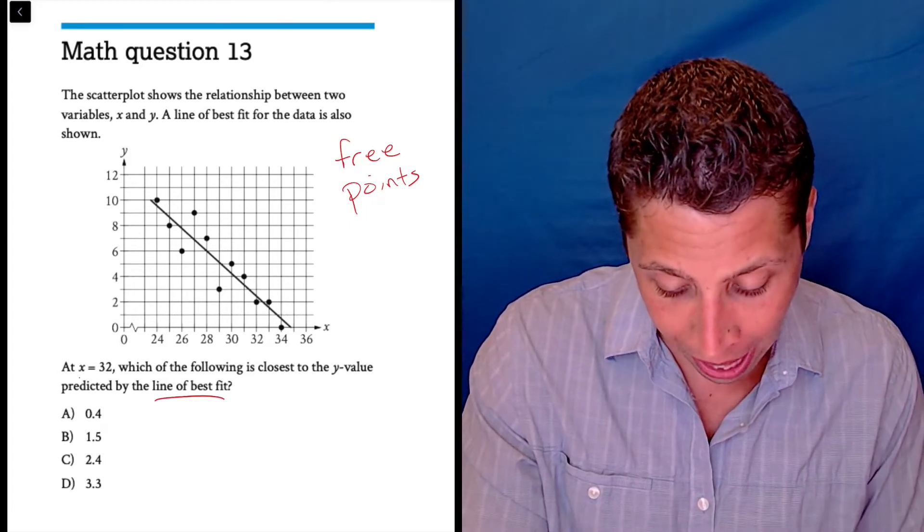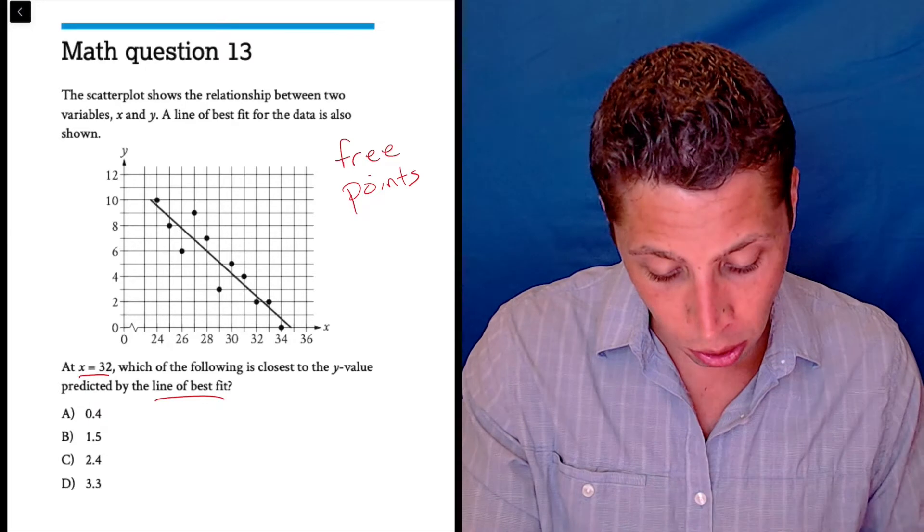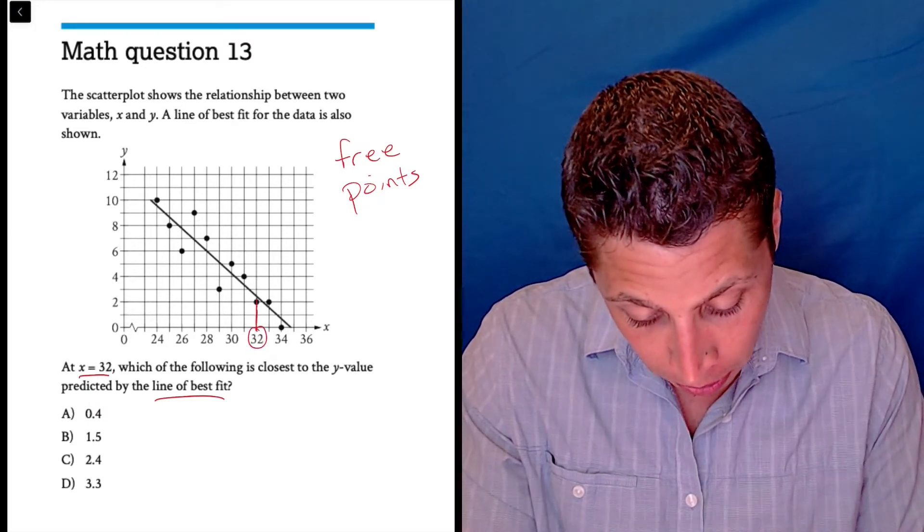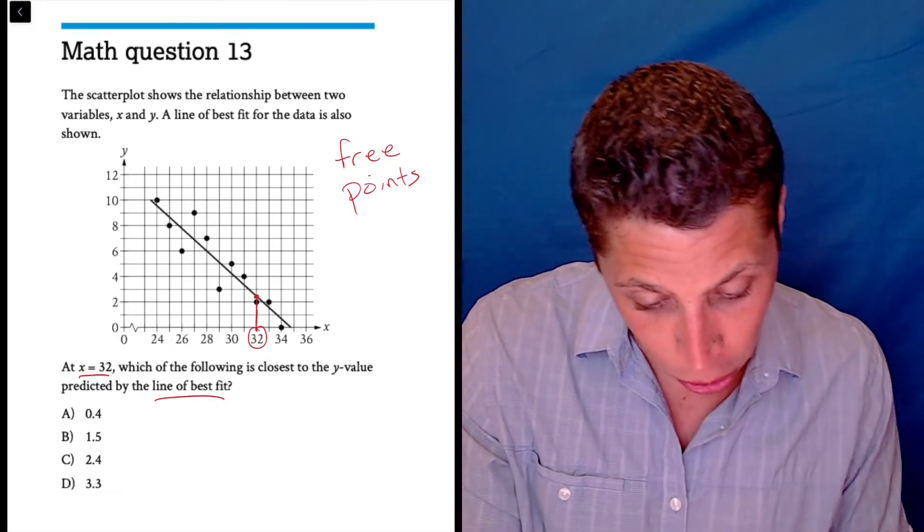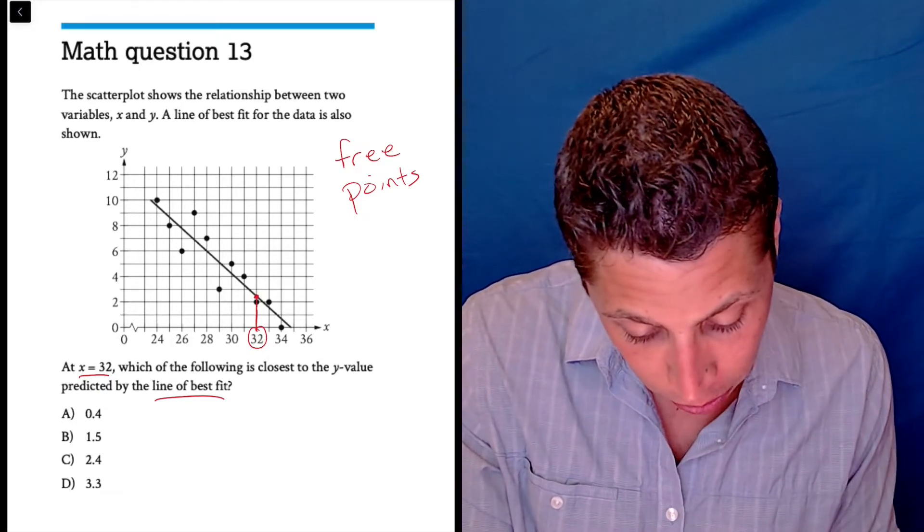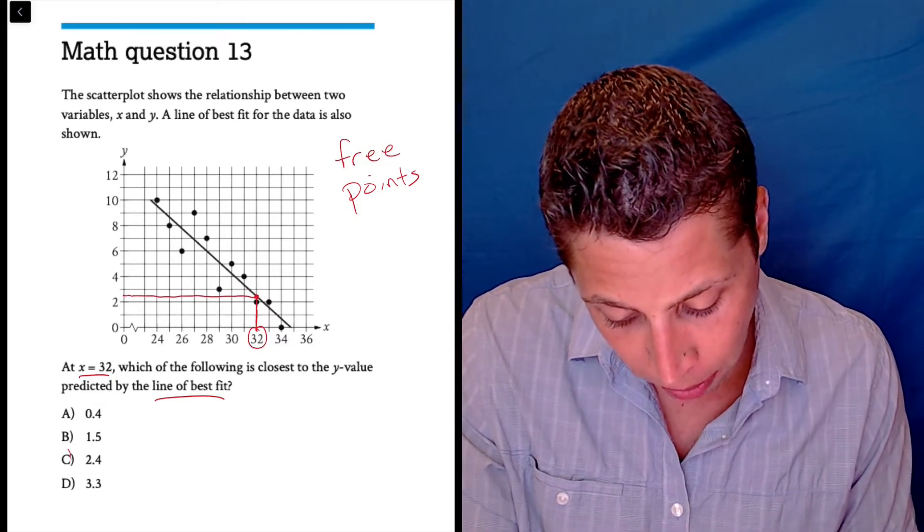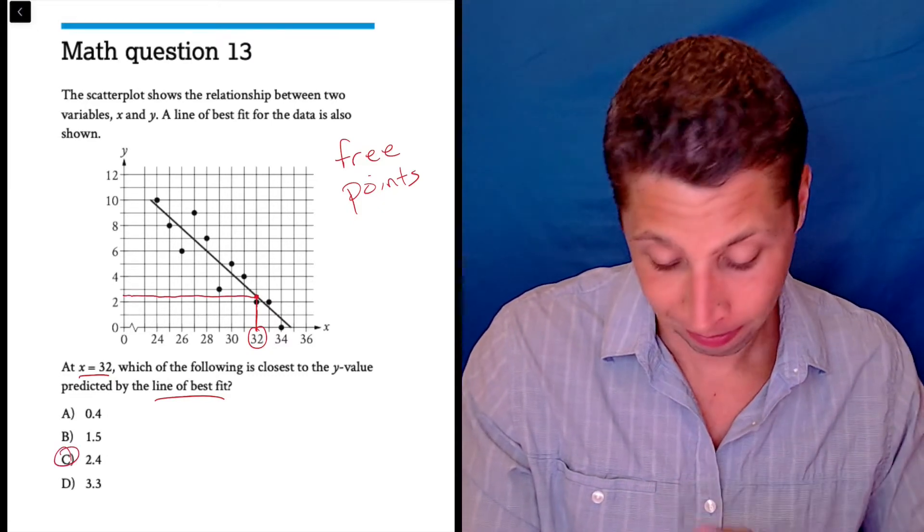Now just make sure you go to the right place. So x is 32, so that's here. Now go up, where does it hit the line? Right here, kind of right above the 2 marker. So go over if you need to. Now where is that? It's right above 2. What's right above 2? 2.4. That's it.